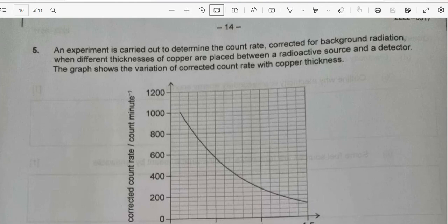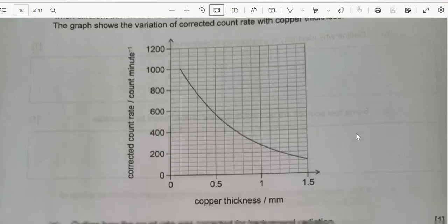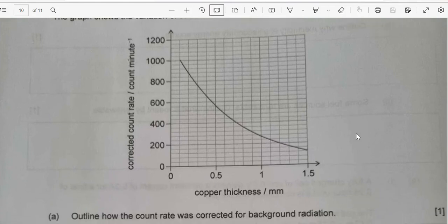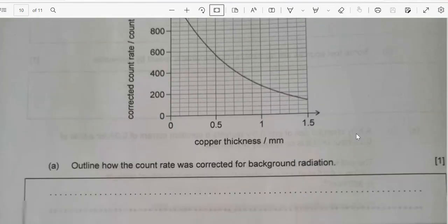Outline how the count rate was corrected for background radiation. Background radiation is counted. Background radiation is subtracted from each reading. This is how the count rate was corrected for the background radiation.